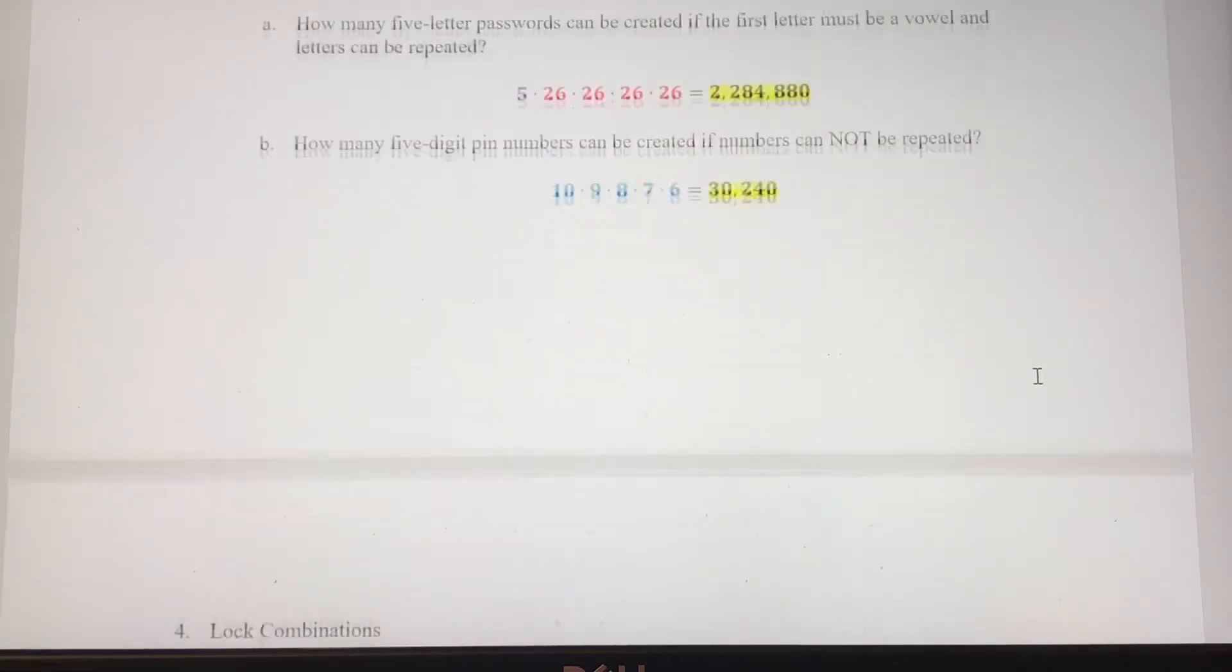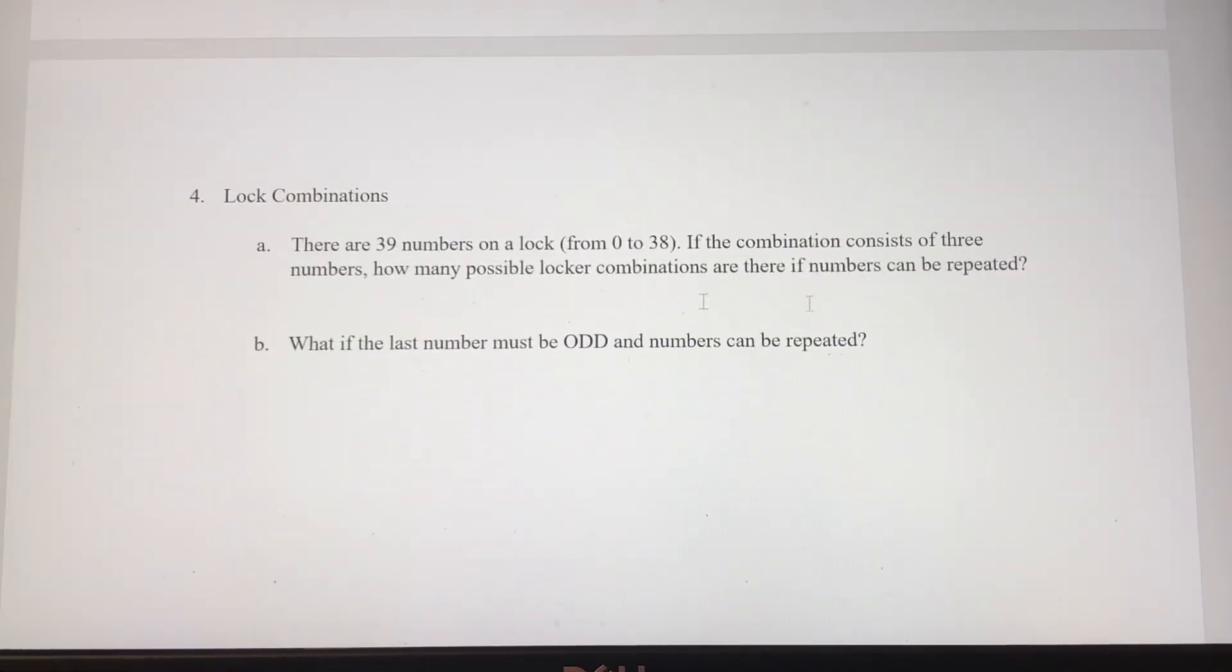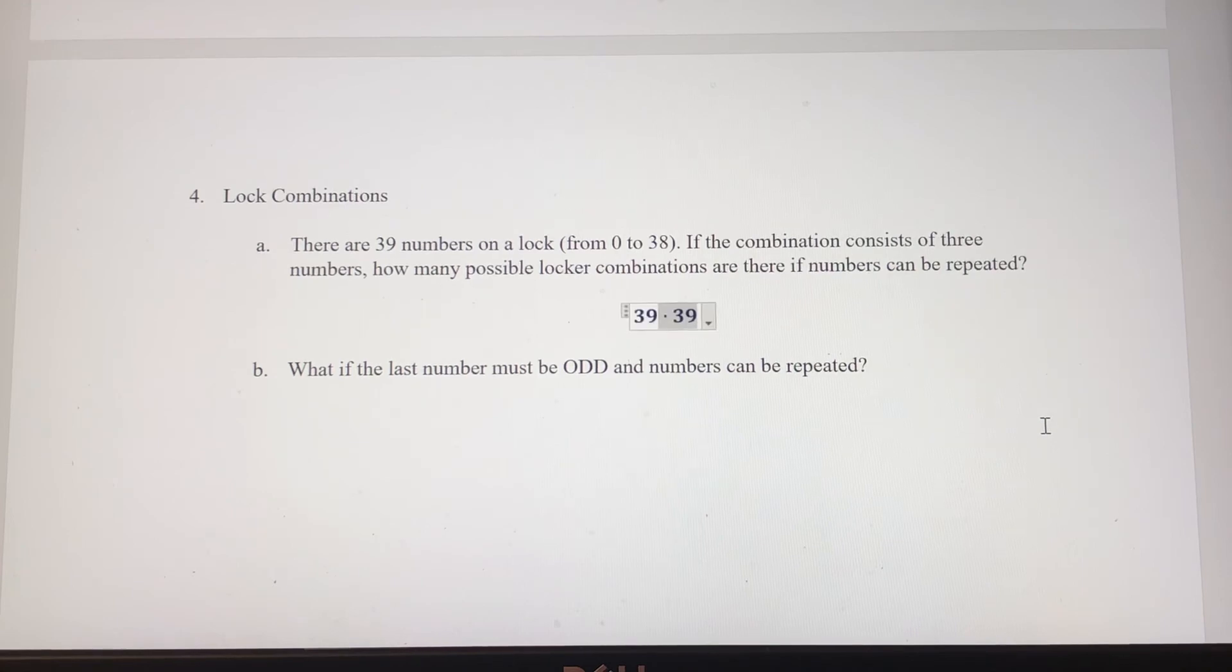Finally, and again, I do things a little differently here with the lock combinations. There are 39 numbers on a lock. Those range from 0 to 38. If the combination consists of three numbers, how many possible locker combinations are there if numbers can be repeated? So we're going to have just 39 to the third power, which is 59,319 possible combinations.